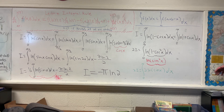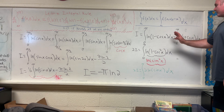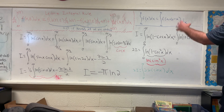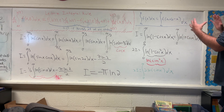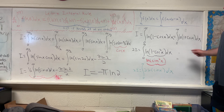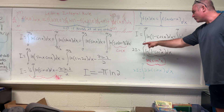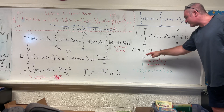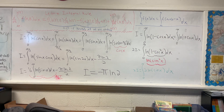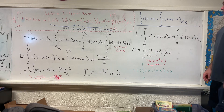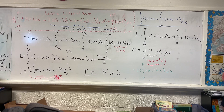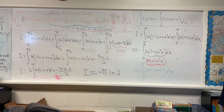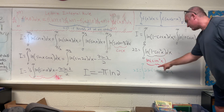Then I add the two expressions together and use the properties of logarithms to bring the sum inside as a product. We get 2I — since we're adding I and I — equal to the integral from zero to pi of the natural log of (1 - cos²x) dx. And we know that 1 - cos²x is sin²x.